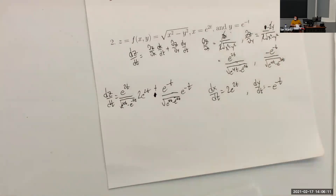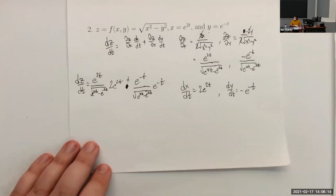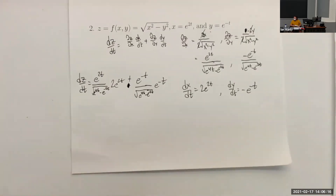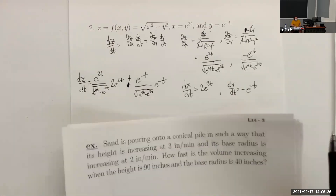Continuing the second example: dx/dt equals 2e^(2t), and dy/dt equals negative e^(−t). Plugging everything into the chain rule formula: dz/dt equals [e^(2t)/√(e^(4t)−e^(−2t))]·2e^(2t) plus [negative e^(−t)/√(e^(4t)−e^(−2t))]·(negative e^(−t)). The negatives cancel in the second term, giving a plus. You could simplify further by factoring e^(−t) out of the denominator if desired.